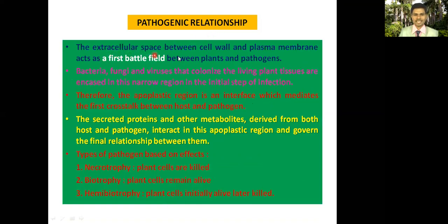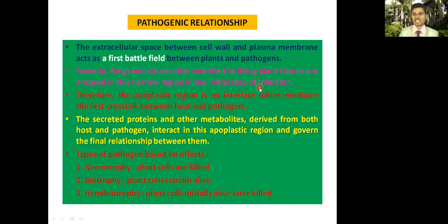The extracellular space between the cell wall and plasma membrane acts as a battlefield. This space — called the apoplastic space — is the first battlefield between plants and pathogens. Pathogens like bacteria, fungi, and viruses that colonize living plant tissues are encased in this narrow region in the initial steps of infection.